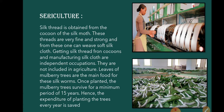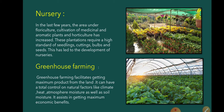We also find various types of plant nurseries. In the last few years, the area under floriculture, cultivation of medicinal and aromatic plants, and horticulture has increased. This plantation requires a high standard of seedlings, cuttings, bulbs and seeds, which has led to the development of nurseries. Nurseries give good returns. Within this, we also find greenhouse farming. Greenhouse farming facilitates getting maximum produce from the land — it allows total control over natural factors like climate, heat, and atmospheric and soil moisture, assisting in getting maximum economic benefits. Greenhouse farming is a highly specialized type of farming of the modern era.